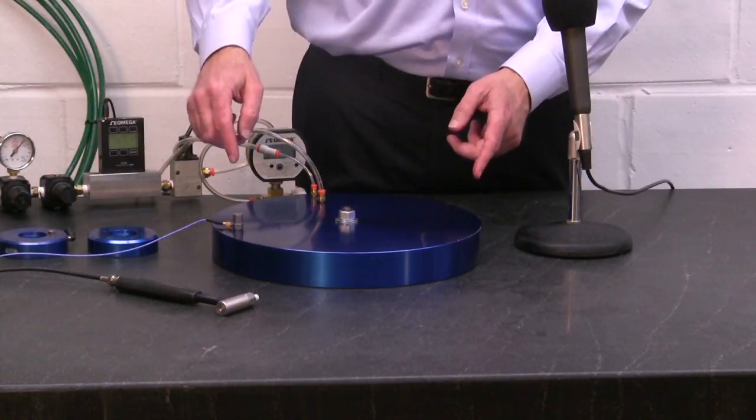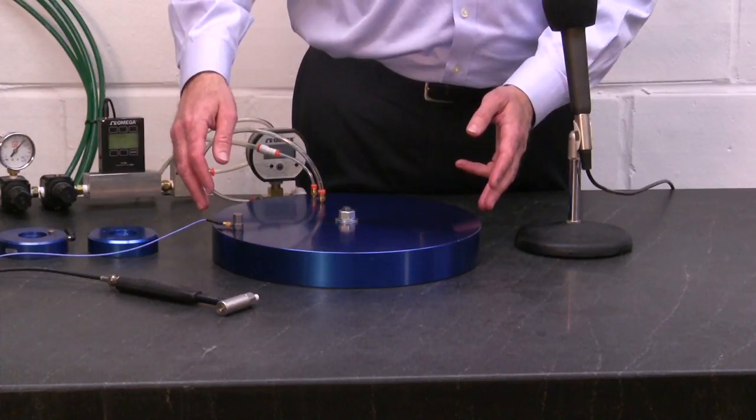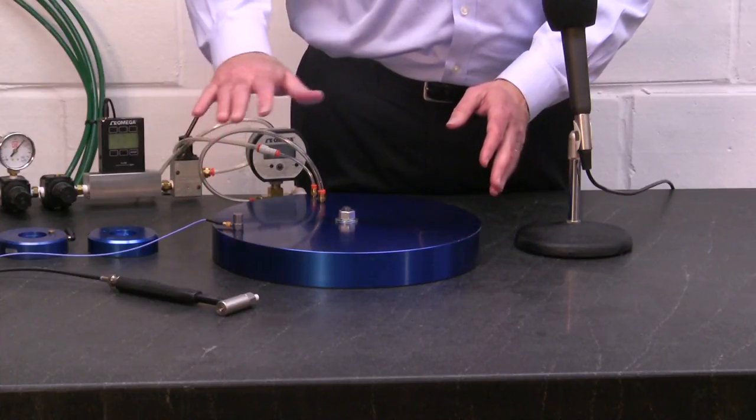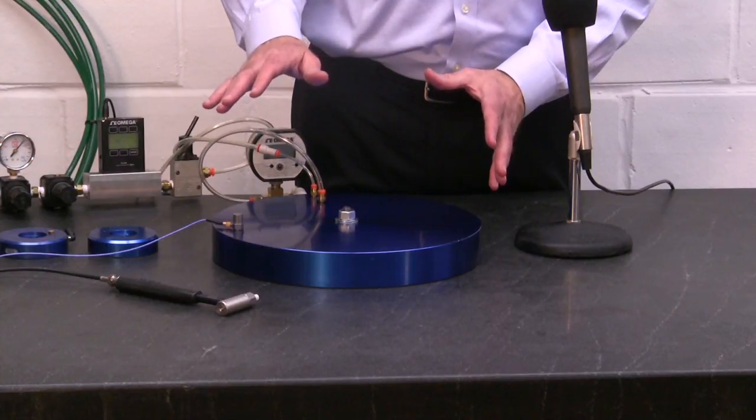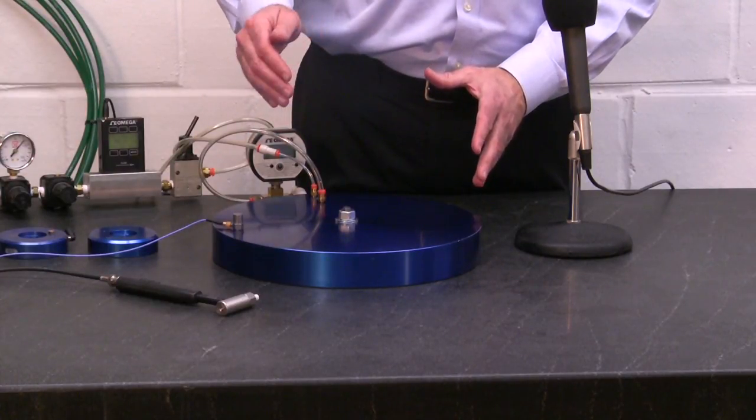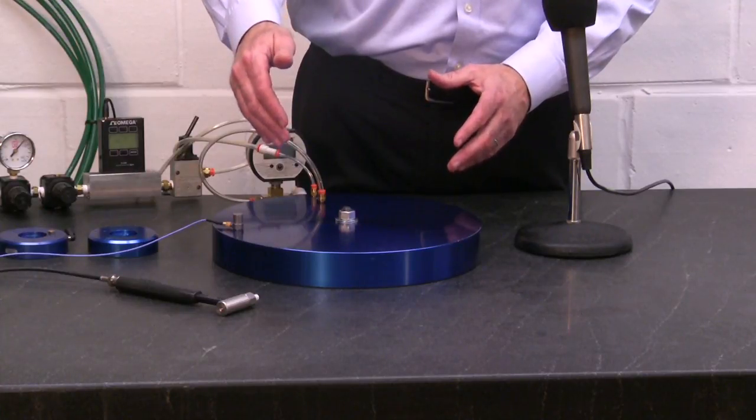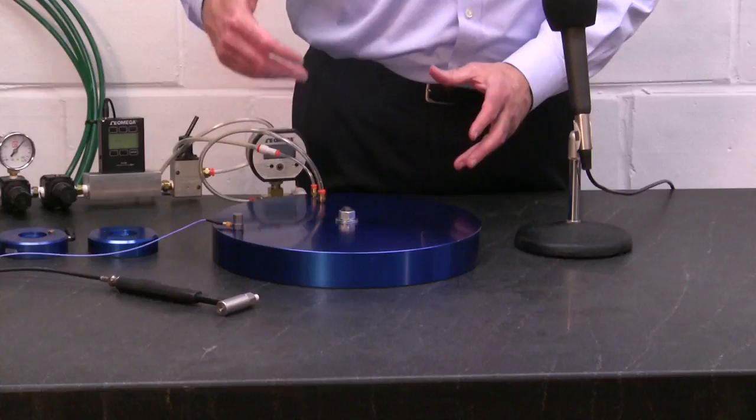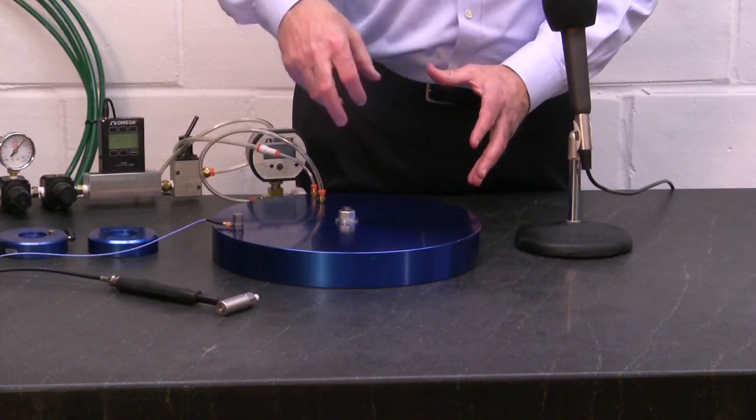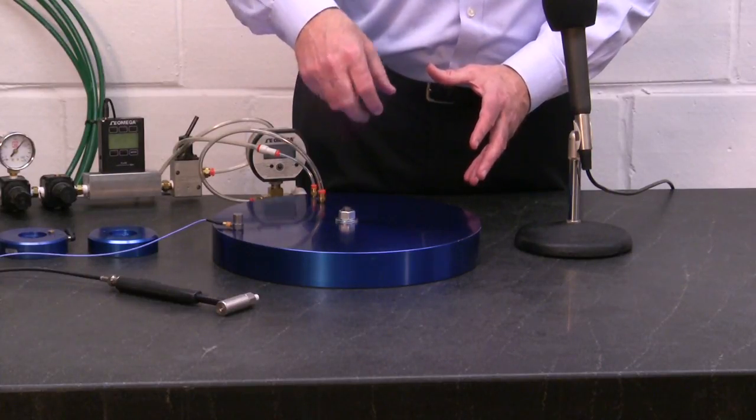The reason we're using a vacuum preloaded air bearing is because it allows us to load the air bearing films in a completely non-influencing fashion. So we know that any damping we might find is attributable to the air films, and not attributable to some structure that we may have coupled to the bearing to load the air bearing films.